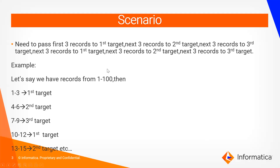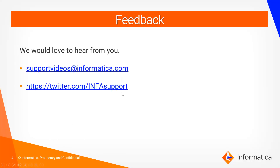For example, if we have records from one to a hundred from the source, records one, two, and three should go to the first target; four to six to the second target; seven to nine to the third target; and again ten to twelve to the first target and thirteen to fifteen to the second target. Like this we have to continue. Now let's start with a quick demo.